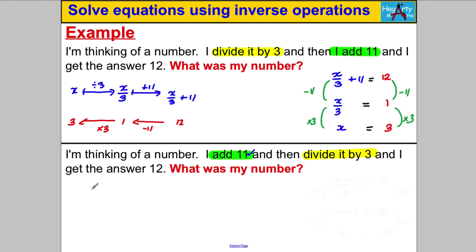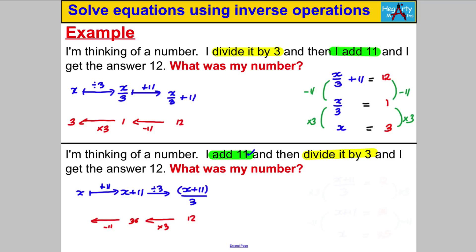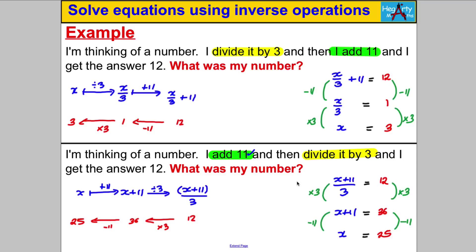The last one looks similar but I add 11 first and divide by 3 afterwards. Starting with X, I add 11 to get X + 11, then divide the whole thing by 3: (X + 11)/3 = 12. To undo: opposite of dividing by 3 is multiplying by 3, so 12 × 3 = 36; opposite of adding 11 is subtracting 11, giving X = 25. We've now worked out how to solve quite complicated problems. In future we won't use the flowchart — we'll just use the algebra, which is neater and easier to write.